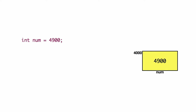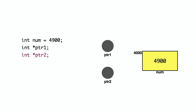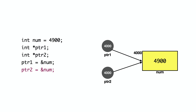Multiple pointers can point to the same variable. For example, int num equals to 4900. Then int asterisk ptr1 and int asterisk ptr2 are two pointer variables. ptr1 equals to ampersand num, so ptr1 points to num. ptr2 also equals to ampersand num, so ptr2 also points to num. Both pointers hold the address of num.